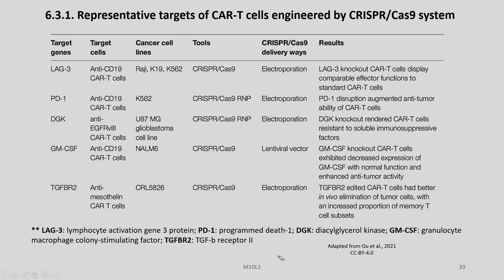The results corresponding to each: LAG-3 knockout CAR T-cells display comparable effector functions to standard CAR T-cells. PD-1 disruption augmented anti-tumor ability of CAR T-cells. DGK knockout rendered CAR T-cells resistant to soluble immunosuppressive factors. GM-CSF knockout CAR T-cells exhibited decreased expression of GM-CSF with normal function and enhanced anti-tumor activity. TGF-betaR2-edited CAR T-cells had better in vivo elimination of tumor cells with an increased proportion of memory T-cell subsets.